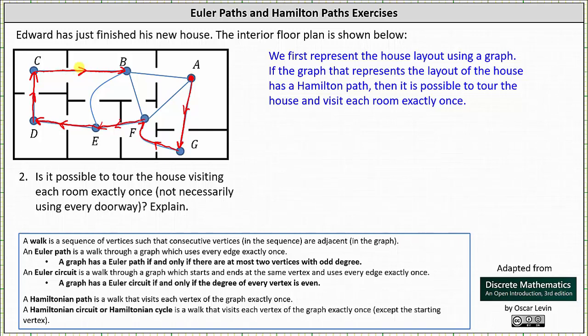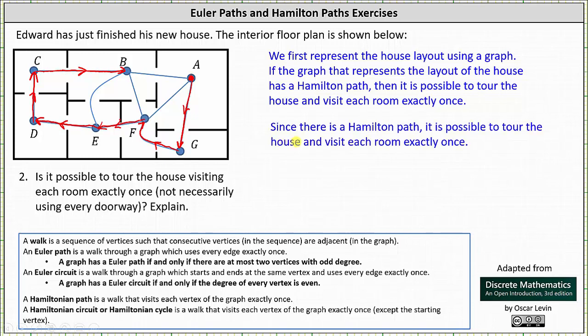And we can stop here. This is a walk that visits each vertex of the graph exactly once — this is one of many possible Hamilton paths. So again, since there is a Hamilton path, it is possible to tour the house and visit each room exactly once.